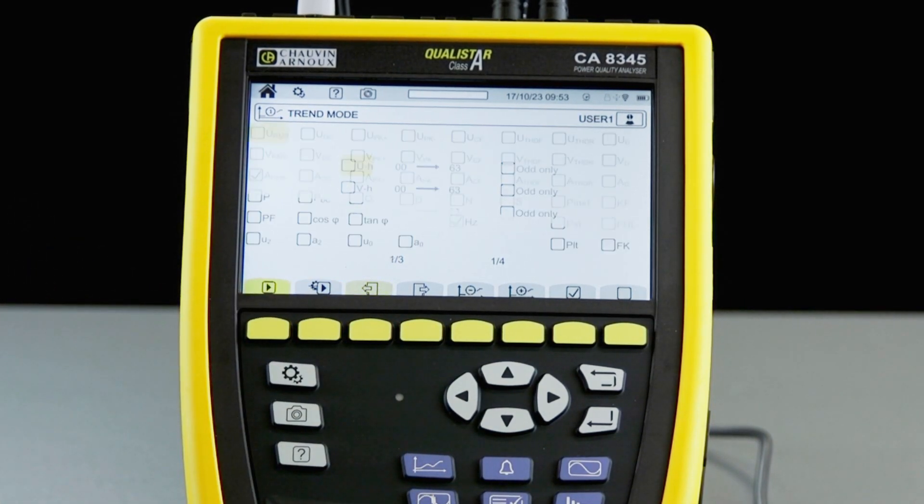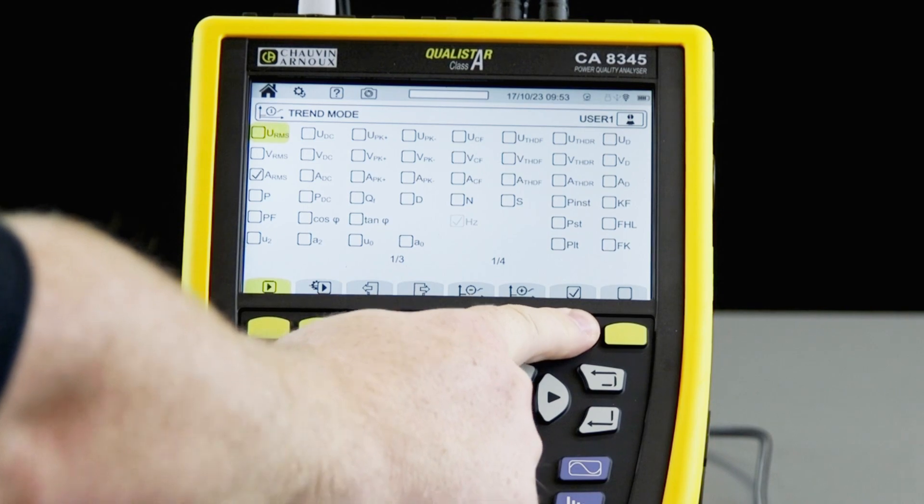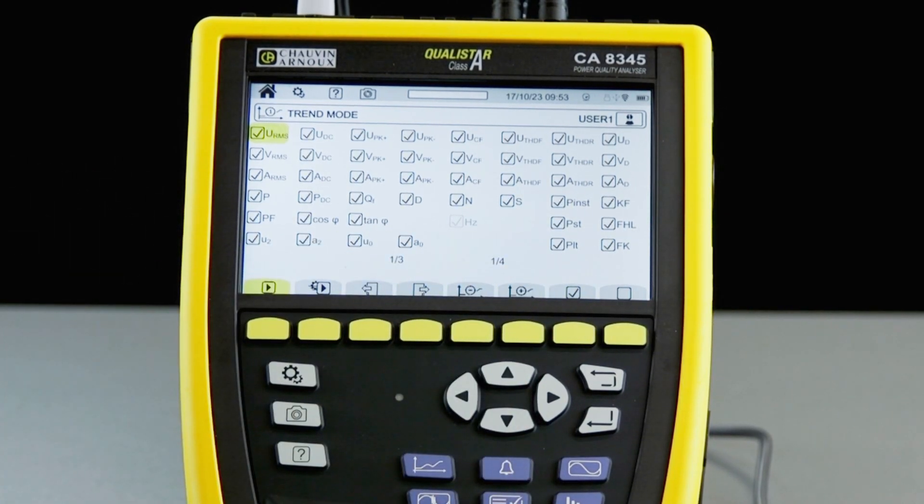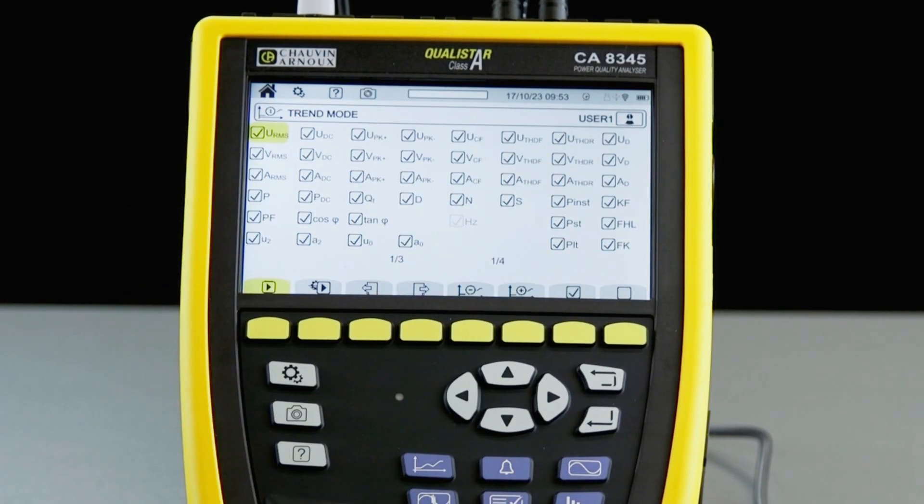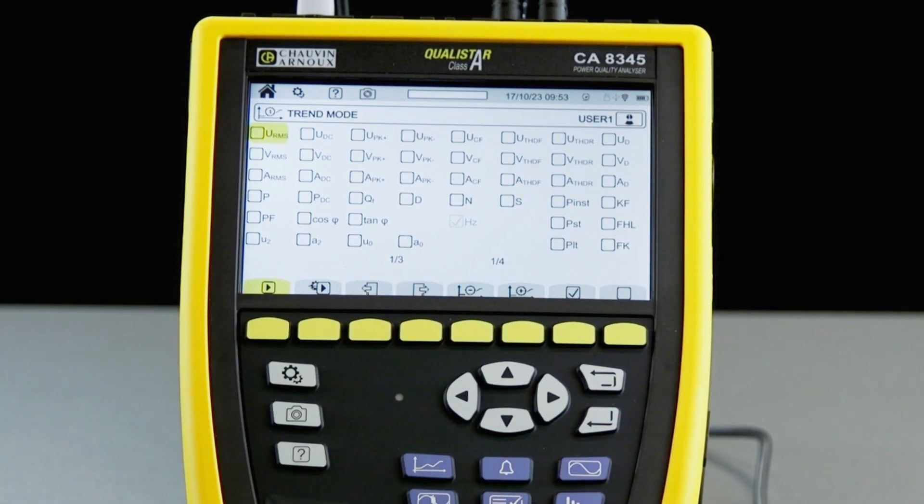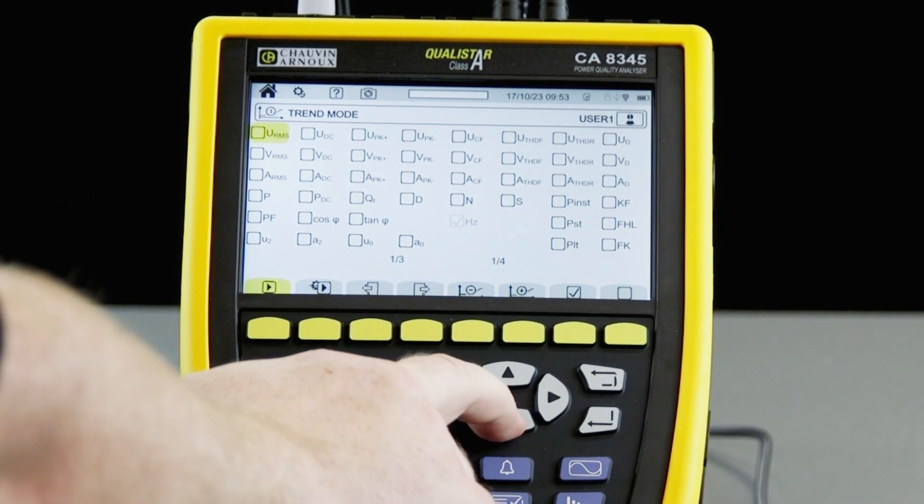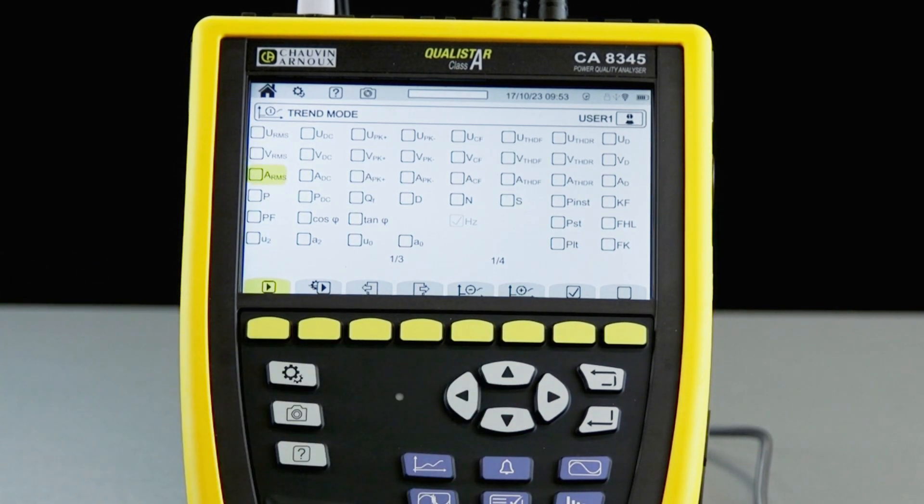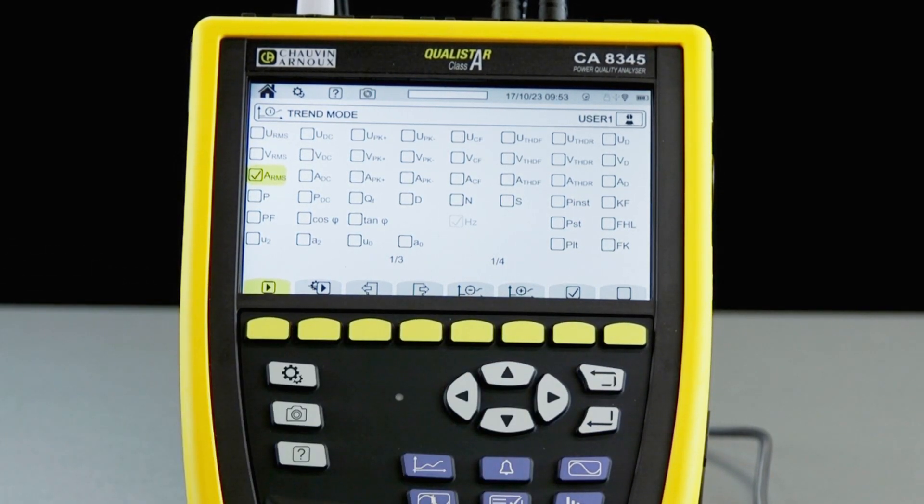It is possible to select all trends by pressing this hotkey and that will tick all the boxes and select all of the trends. However, if we just wanted to record a single item or a selection of items, we can select the boxes individually.